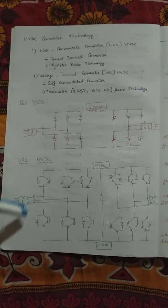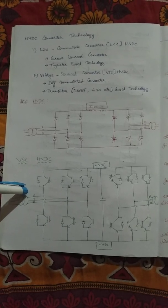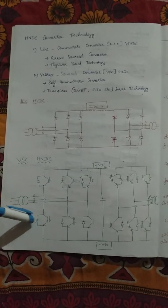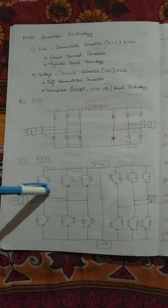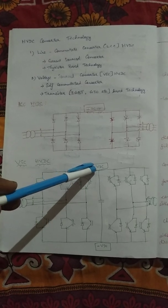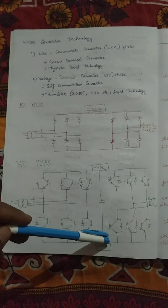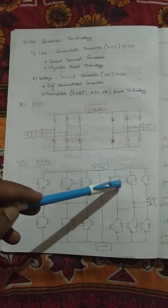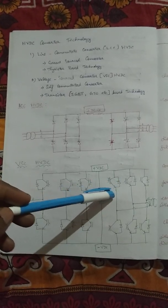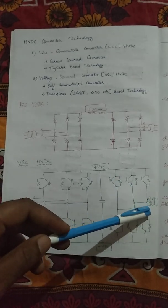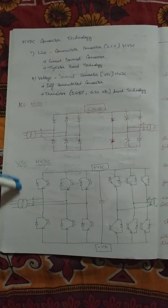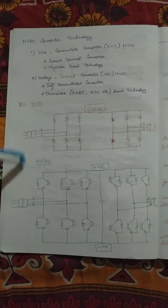For VSC HVDC stations, the sending-end converter transformer is connected through MOSFET, IGBT, or GTO devices. The positive voltage line and negative voltage return line connect to the receiving end, which has the same six-pulse MOSFET/IGBT/GTO section connected to a converter transformer. This is the layout of the VSC HVDC station.